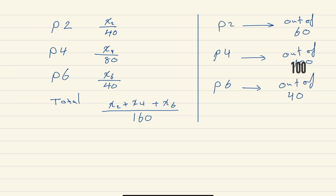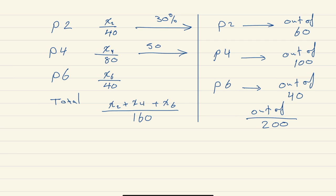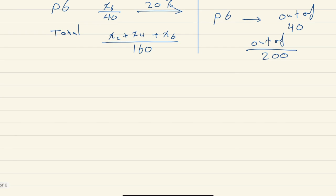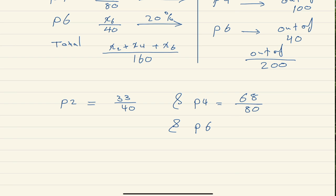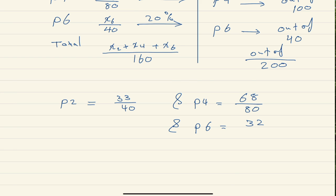To summarize the loads: paper two has a load of 30% (out of 60), paper four has a load of 50% (out of 100), and paper six has a load of 20% (out of 40), with a total out of 200. Here's a worked example: if you got 33 out of 40 in paper two, 68 out of 80 in paper four, and 32 out of 40 in paper six...